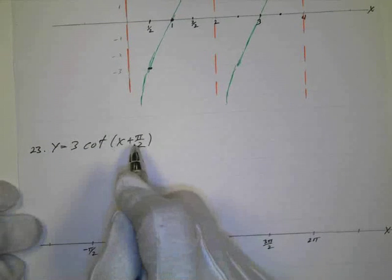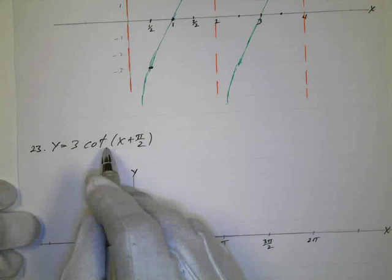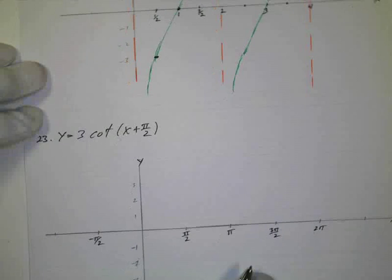Now we've got a shift, phase shift. Looks like we're going to shift to the left pi over 2. I don't have any kind of period change, so that's nice. I do have an amplitude of 3 here that I'm going to multiply.